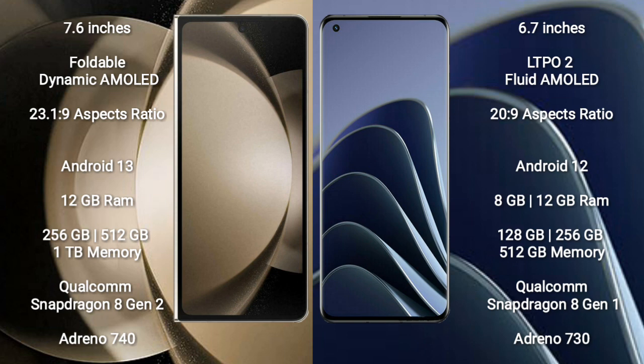The Samsung Galaxy Z Fold 5 runs on Android 13, while the OnePlus 10 Pro runs on Android 12. The Samsung Galaxy Z Fold 5 comes with 12GB RAM and 256GB internal storage, powered by a Qualcomm Snapdragon 8 Gen 2 processor with Adreno 740 GPU. The OnePlus 10 Pro comes with 8GB or 12GB RAM and 128GB or 256GB internal storage, with a Qualcomm Snapdragon 8 Gen 1 processor and Adreno 730 GPU.